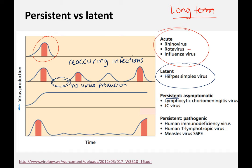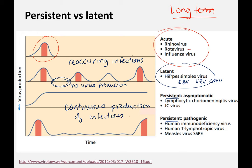If you've ever had cold sores, you know all about this: you can get an outbreak and then nothing — your immune system kind of clears it, but the virus is still hanging out in some of your cells. Then you have a reoccurring infection. In contrast, a persistent infection means there's continuous production of infectious virus — it can be very, very low level.